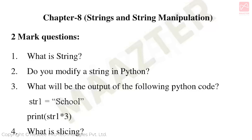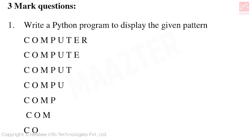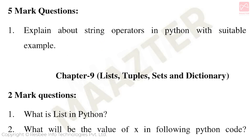Chapter 8: Strings and String Manipulation. Important 2-mark questions: What is a string? How do you modify a string in Python? What will be the output for the following Python code? What is slicing? Important 3-mark questions: Write a Python program to display the given pattern. Important 5-mark questions: Explain about string operators in Python with a suitable example. In this chapter, program-based output questions are likely to be asked.